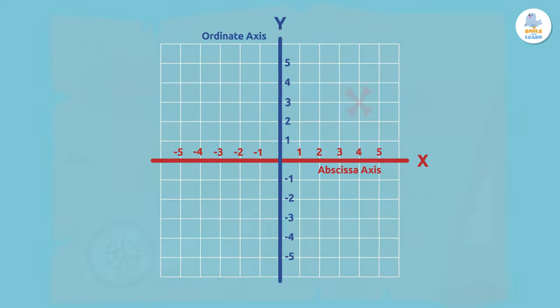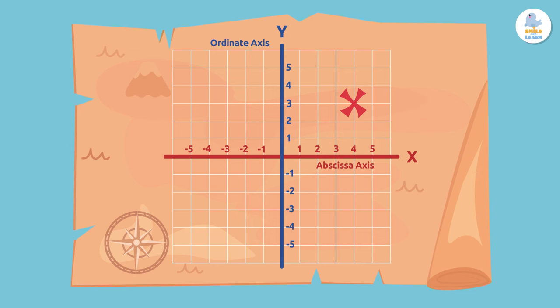Now let's focus on finding our treasure. What is the x-axis coordinate? Let's see: one, two, three, four. It's four. And the y-axis?